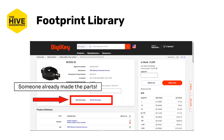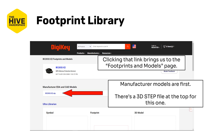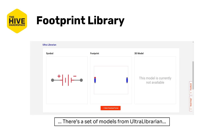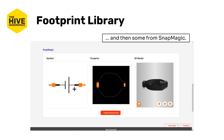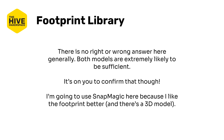If you check DigiKey, you can see that someone's already made the parts because they have a nice little link on their page. Clicking on that brings us to the footprints and models page. At the top, you get the manufacturer's 3D model — generally this will be a STEP file. If we scroll down, we see a set of models from UltraLibrarian and then one from SnapMagic. There's really no right or wrong answer about which to use — typically both models are totally sufficient. I'm going to use SnapMagic because I like the footprint better, and there's also a 3D model, which is nice.